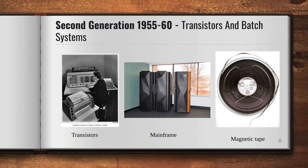In the second generation, from 1955 to 1965, transistors led to the development of computer systems. These machines were known as mainframes and were housed in air-conditioned rooms. The batch system was then introduced to reduce wasted time in the computer. A tray full of jobs was collected in the input room and read into magnetic tape, which was mounted on a tape drive. The batch operating system was then loaded to read the job and run it.